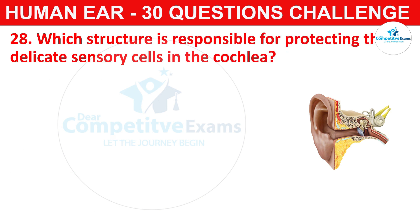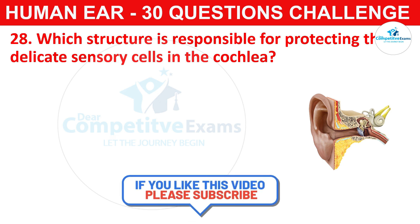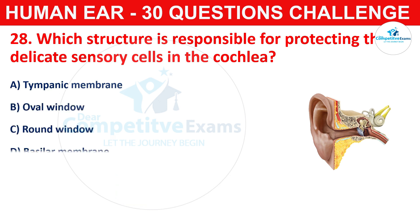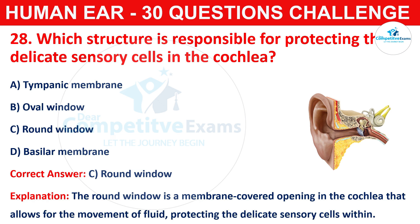Question number twenty-eight: which structure is responsible for protecting the delicate sensory cells in the cochlea? The options are tympanic membrane, oval window, round window, or basilar membrane. The correct answer is C, that is round window. The round window is a membrane-covered opening in the cochlea that allows for the movement of fluid, protecting the delicate sensory cells within.